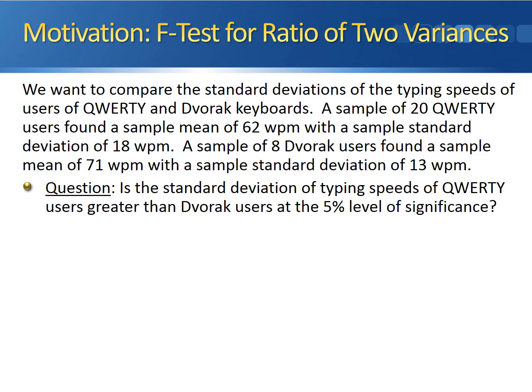We're looking at QWERTY keyboard users versus Dvorak keyboard users. A sample of 20 QWERTY keyboard users found that they typed with an average speed of 62 words per minute and a sample standard deviation of 18 words per minute. A sample of 8 Dvorak keyboard users found a sample mean of 71 words per minute with a sample standard deviation of 13 words per minute. We want to know if the standard deviation of the typing speeds of QWERTY keyboard users is greater than that of Dvorak keyboard users at the 5% level of significance.